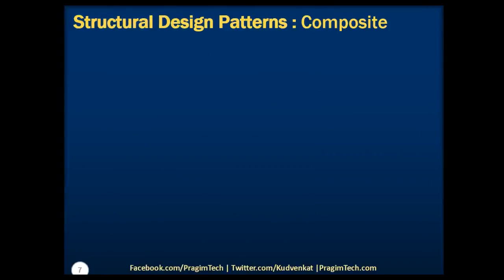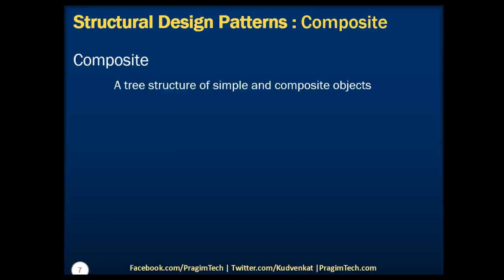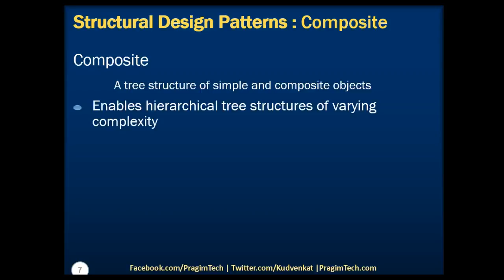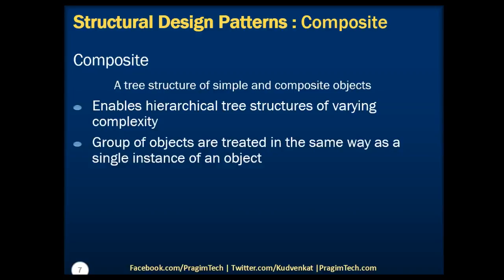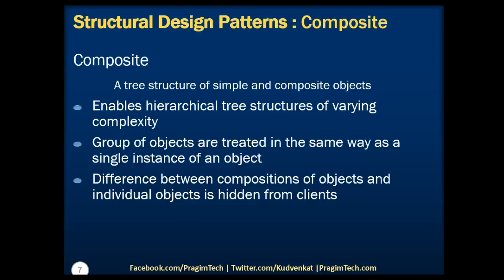Let's now look into the composite pattern. As per Gang of Four definition, composite design pattern constitutes a tree structure of simple and composite objects. In object-oriented programming, a composite is an object designed as a composition of one or more similar objects all exhibiting similar functionality. The composite pattern enables us to create hierarchical tree structures of varying complexity while allowing every element in the structure to operate with a uniform interface.